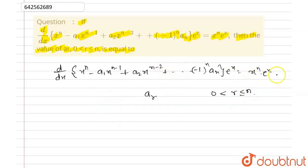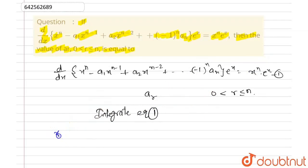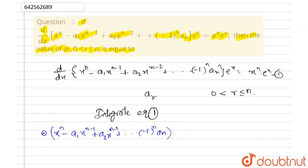Now we have to integrate — this is our equation 1. Integrating equation 1, we can write it as: (x^n − a1·x^(n−1) + a2·x^(n−2) + ... + (−1)^n · a_n) · e^x equals the integration of x^n · e^x dx.